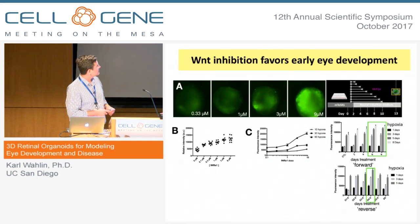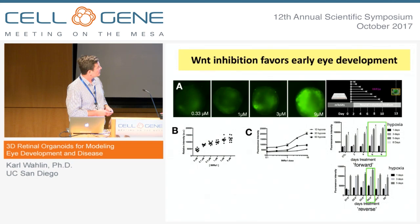We tested 2, 4, 6, 8, and 10 days of Wnt inhibitor treatment. With extended periods, we saw greater levels of SIX6-GFP expression. We did this under a variety of hypoxic conditions as well, and always had higher levels with longer periods of hypoxia as opposed to short periods.